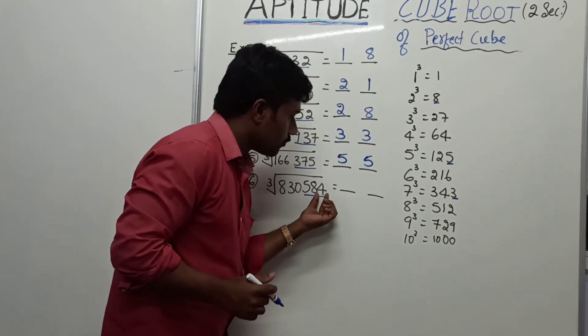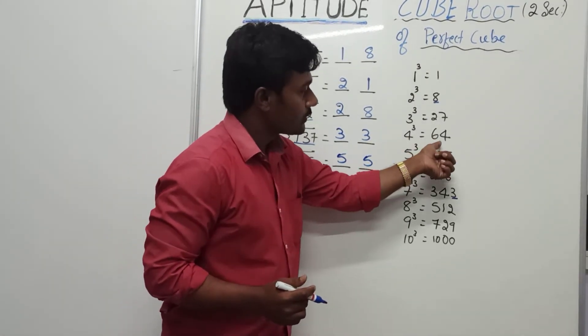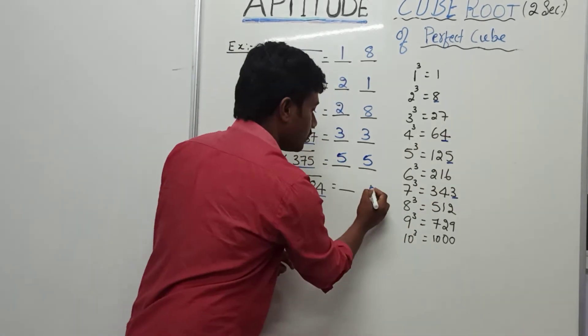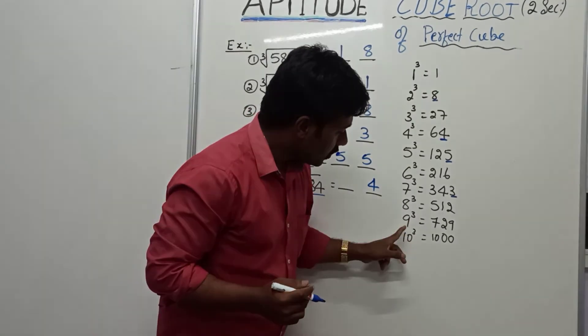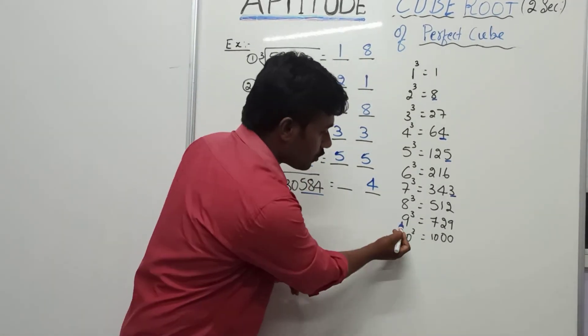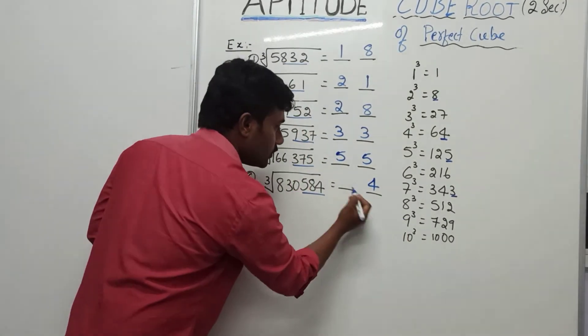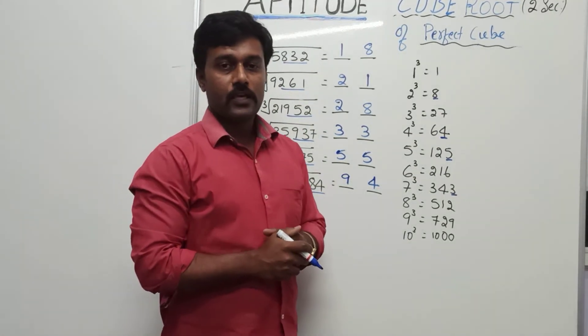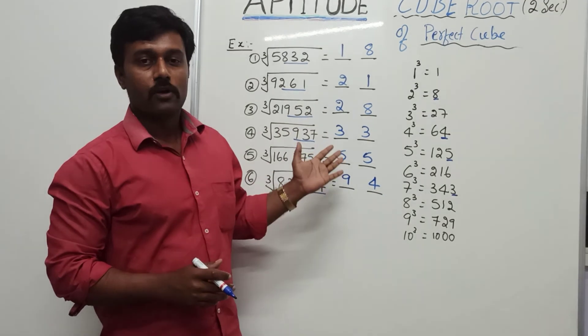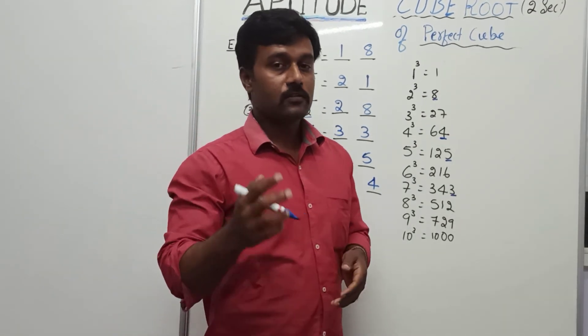Then, here, 4 cube. 4 cube is 64. The unit digit is 4. Write it. 830 lies between 9 cube and 10 cube. So minimum cube is 9. Take that base. So, this is how we can easily find the cube root of perfect cubes within 2 seconds. Thank you.